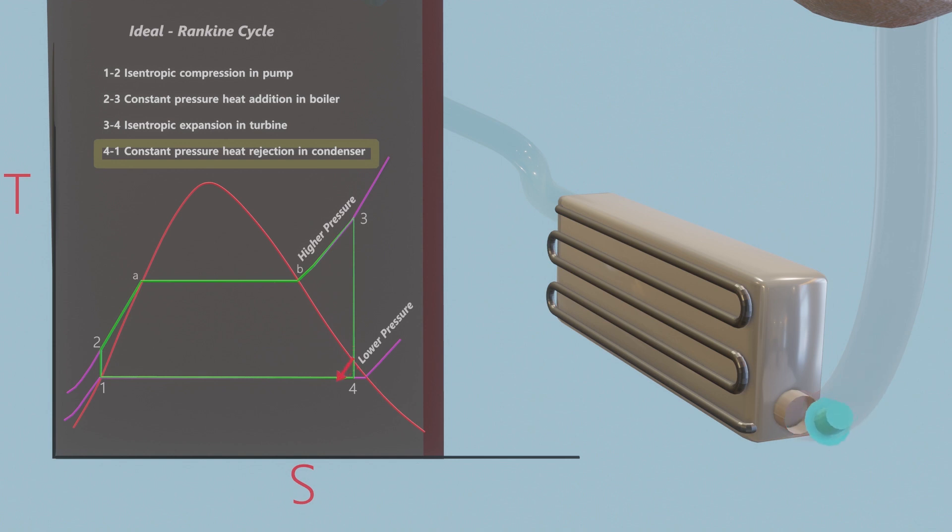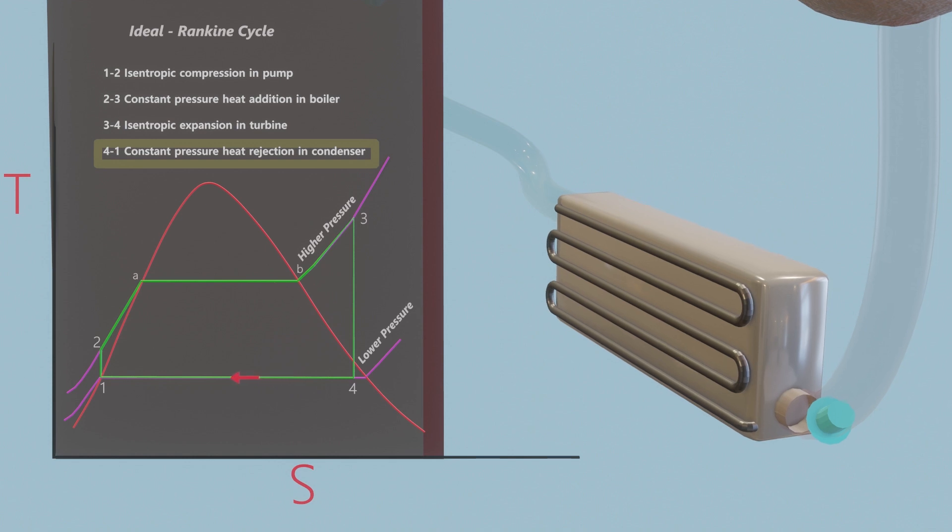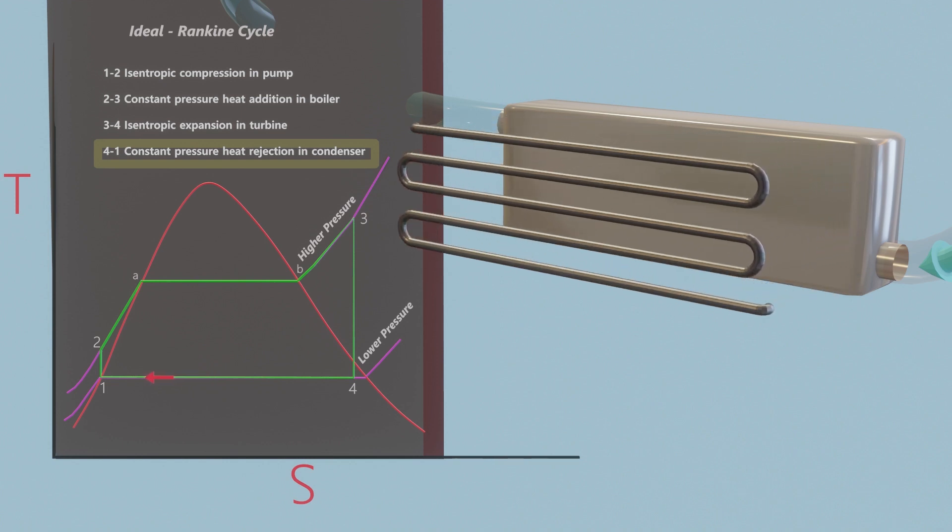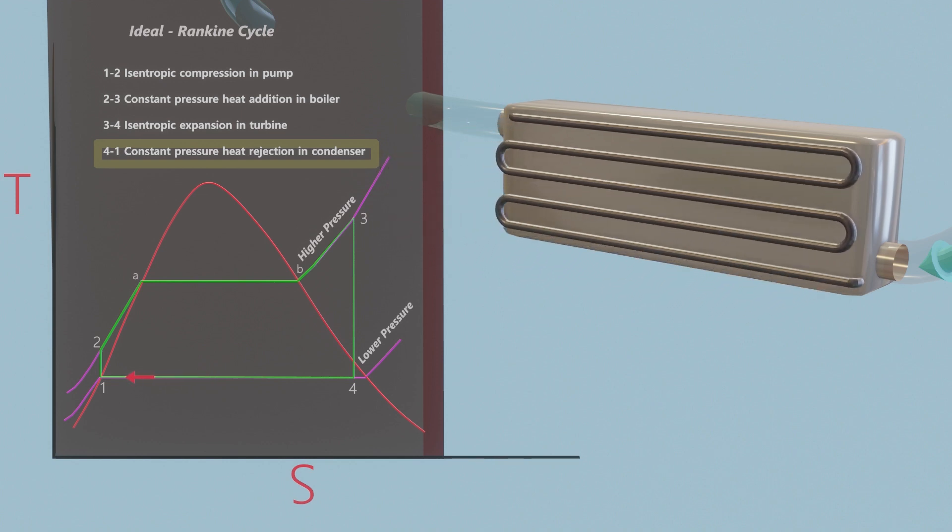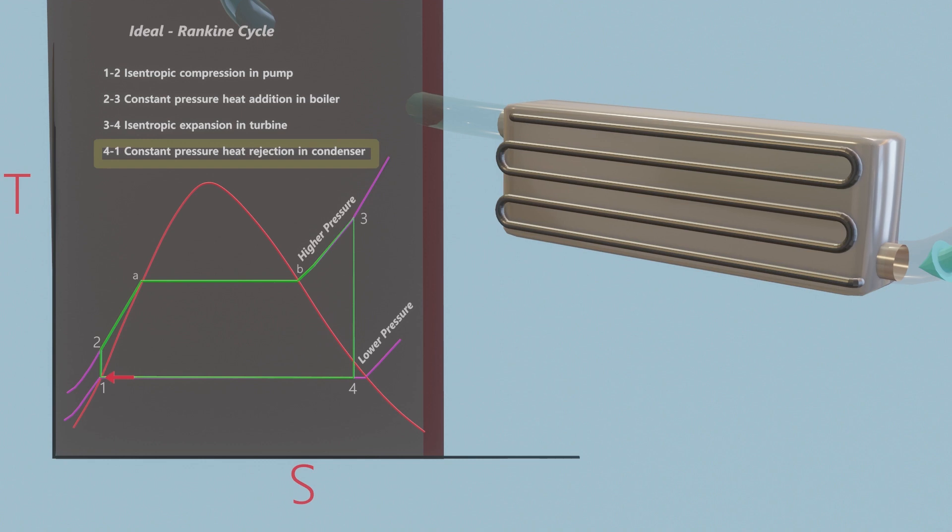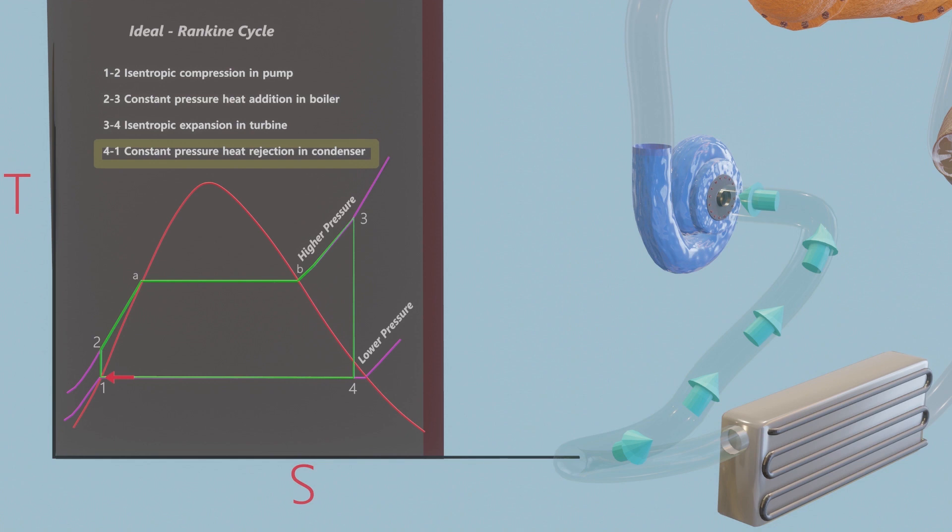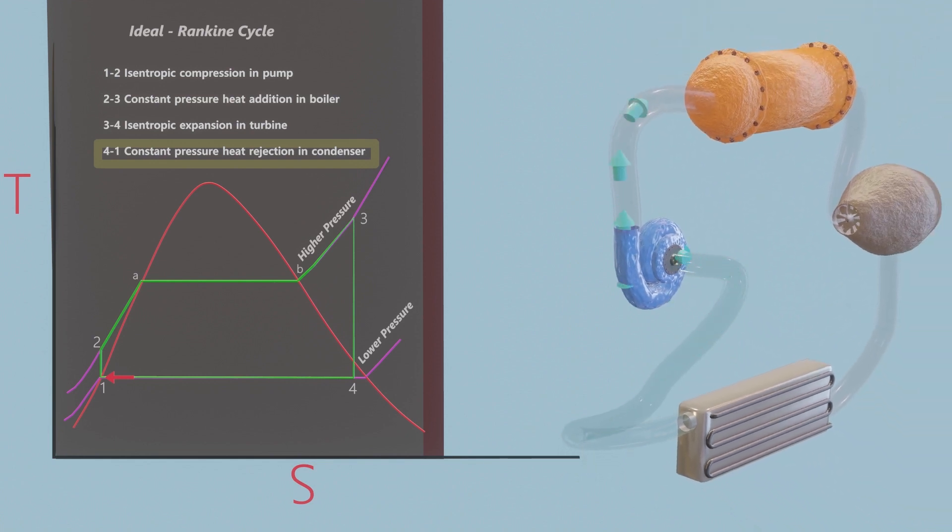At this state, steam is usually a saturated liquid vapor mixture with a high quality. Steam is condensed at constant pressure in the condenser which is basically a large heat exchanger by rejecting heat to a cooling medium such as a lake, a river, or the atmosphere. Finally, steam leaves the condenser as saturated liquid and enters the pump, completing the cycle.